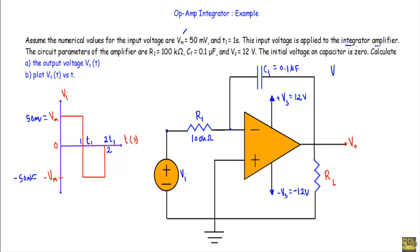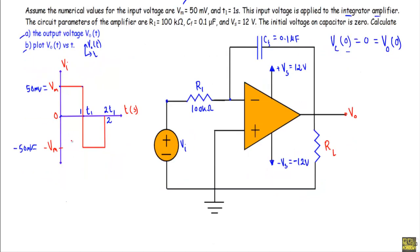The initial voltage on the capacitor is zero, meaning the capacitor will not store any charge initially. As a result, when t is equal to zero, the voltage on the capacitor is zero and since there are no other voltages in the circuit, the initial output voltage will also be equal to zero. We need to calculate the output voltage and plot Vo(t) versus t.